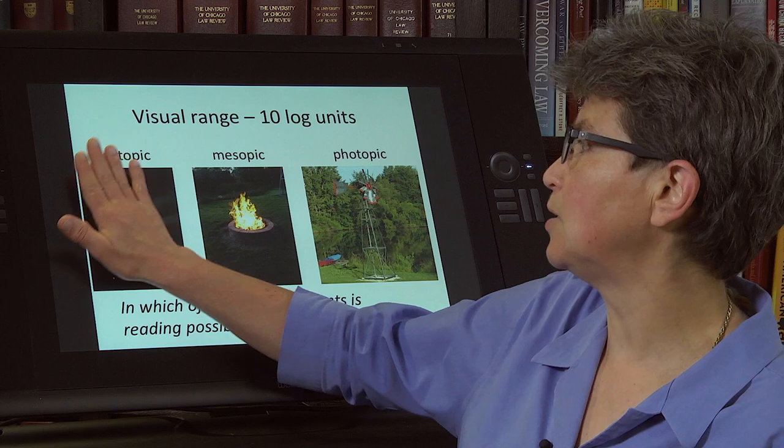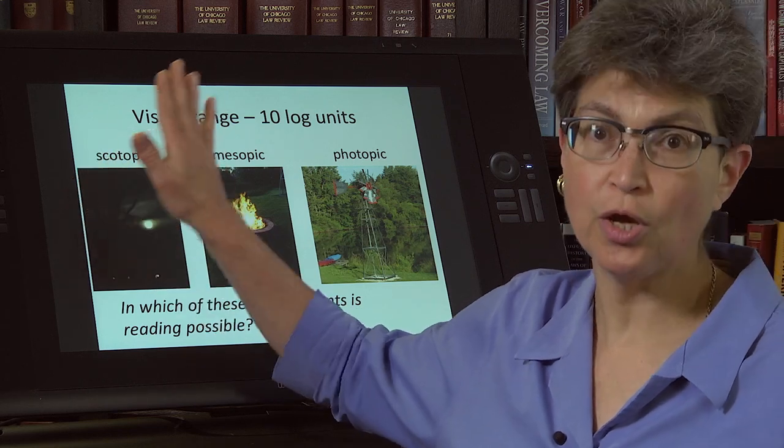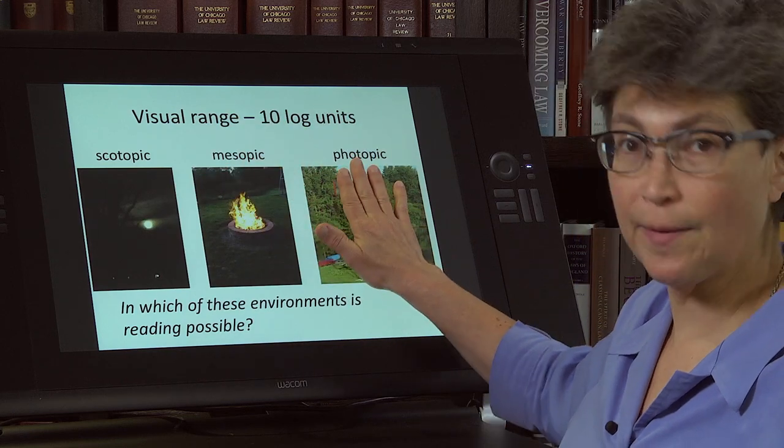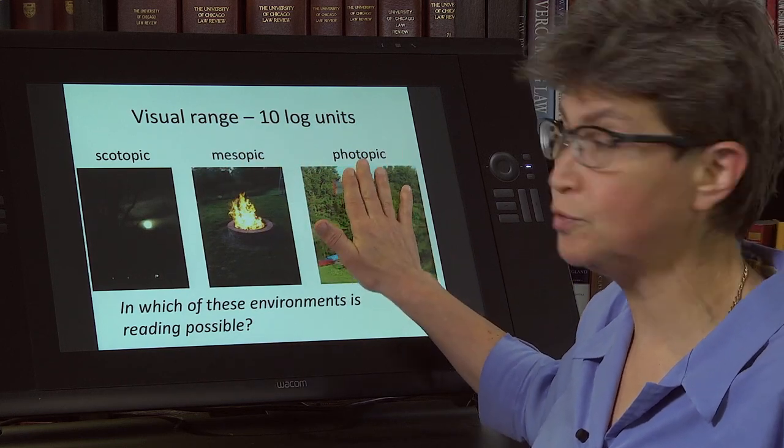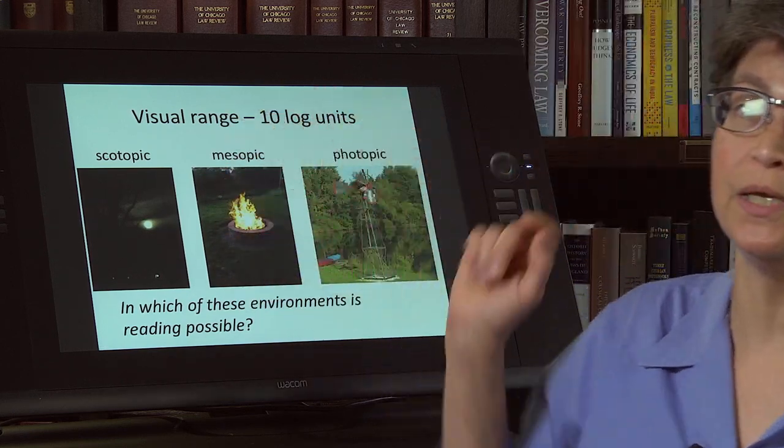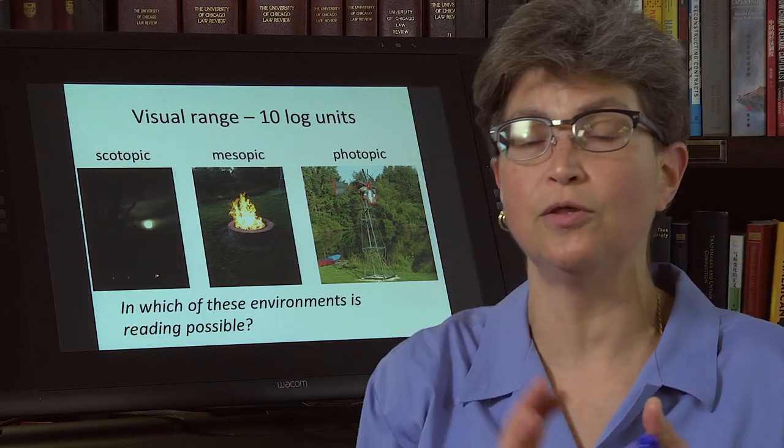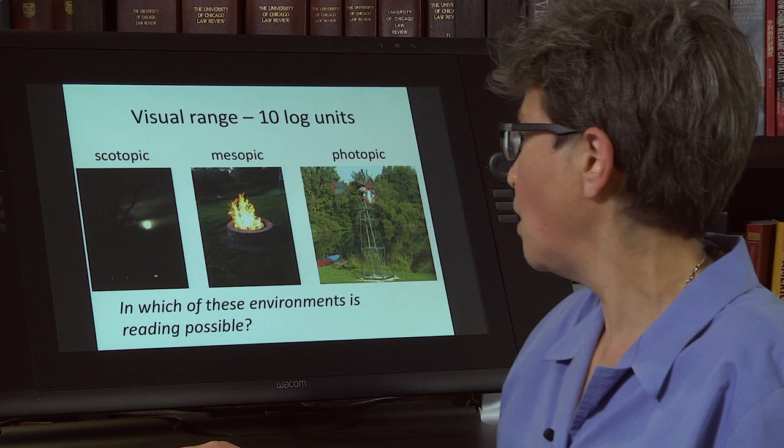So scotopic, mesopic, and photopic. What we're going to see is that in scotopic conditions, vision is supported only by rods. In photopic conditions, only by cones. And in the mesopic intermediate, the rods are on their way down and the cones are coming up.